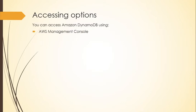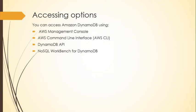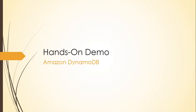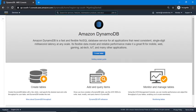For accessing options, you can access DynamoDB using the AWS Management Console, AWS CLI, DynamoDB API, NoSQL Workbench for DynamoDB, and IP address ranges. You can also download DynamoDB on your local computer using a JAR, Apache Maven repository, or Docker image. Now let's move on to the hands-on demo — I'm going to switch to my AWS console.